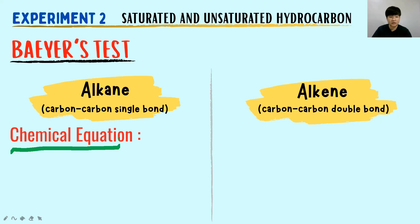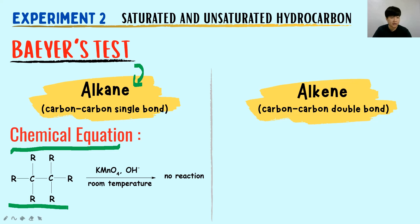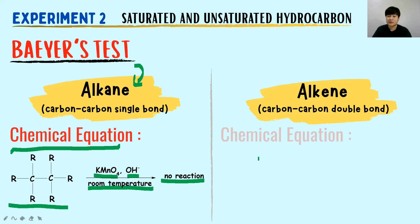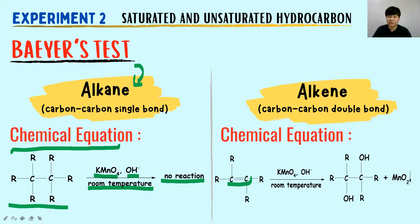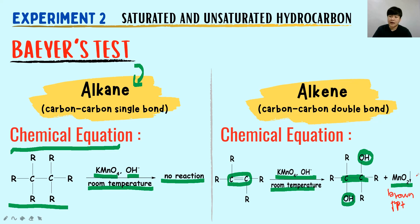For the chemical equation of alkane in the Baeyer test: the saturated hydrocarbon alkane reacts with KMnO₄/OH⁻ at room temperature — there will be no reaction, so the purple color of KMnO₄ remains unchanged. For alkene, the carbon-carbon double bond becomes a single bond, OH groups are added to each carbon that held the double bond, and MnO₂ is produced. MnO₂ is your brown precipitate, indicated by a downward arrow.